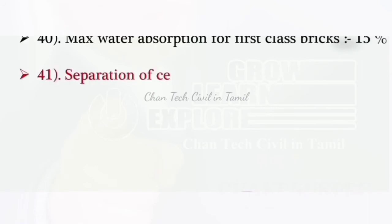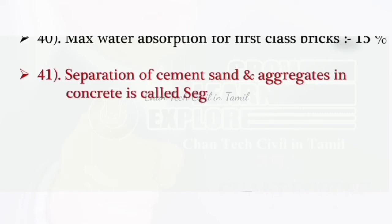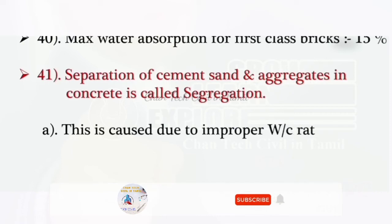Maximum water absorption for first class brick is 15 percentage. Separation of cement, sand and aggregate is called segregation. This is caused due to improper water cement ratio.